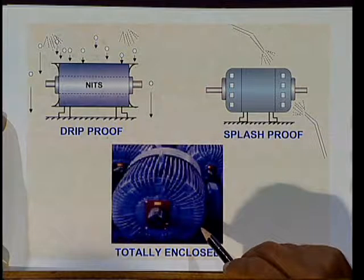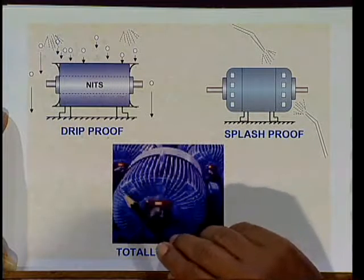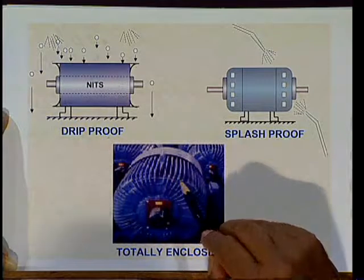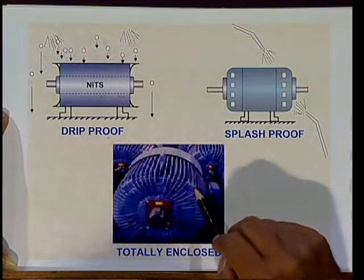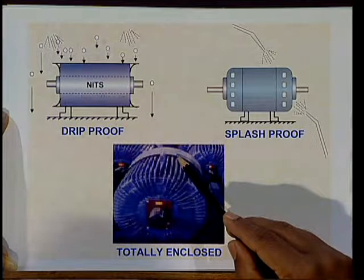In totally enclosed type motors, there are no openings provided. Due to losses, the motor may heat up, and heat is dissipated to the surroundings via hot air or by providing fins on the outer surface of the motor, which increases the contact area. Generally, this type of motor is used where the dust atmosphere is more, such as in pulverization plants, saw machines, and stone crushing quarries.